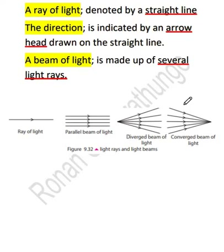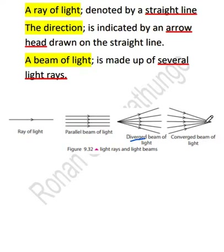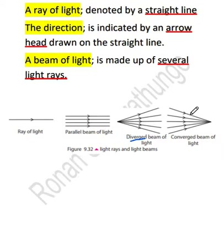One type is diverged beams of light, the other is converged beams of light. When considering diverged beams of light, they all spread from one point to another. When considering converged beams of light, the light rays that were diverged initially are being brought together at one point. Diverged beams are the beams in which all the light rays are being diverged, and converged beams are those in which light rays get converged to one point — they get collected to one point.